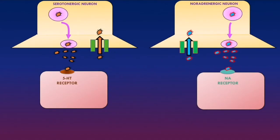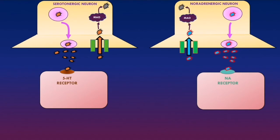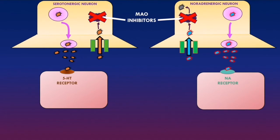In the presynaptic neurons of both serotonergic and noradrenergic neurons, there are monoamine oxidase enzymes. These enzymes degrade the neurotransmitters taken up from the synaptic cleft — degrading serotonin in serotonergic neurons and noradrenaline in noradrenergic neurons. Monoamine oxidase inhibitors, or MAOIs, inhibit these enzymes so that serotonin taken up is not degraded in serotonergic neurons and noradrenaline taken up is not degraded in noradrenergic neurons, meaning more of each is packaged back into vesicles.